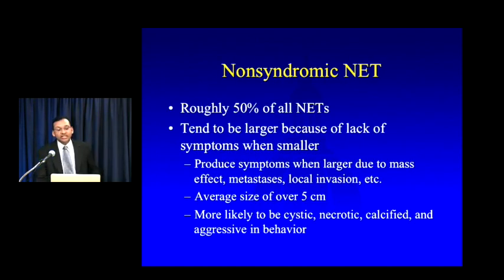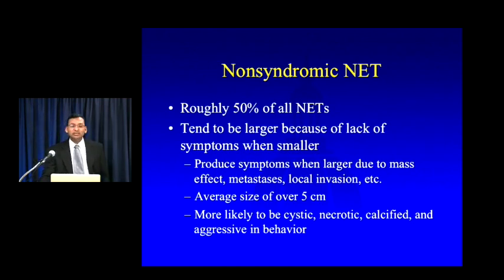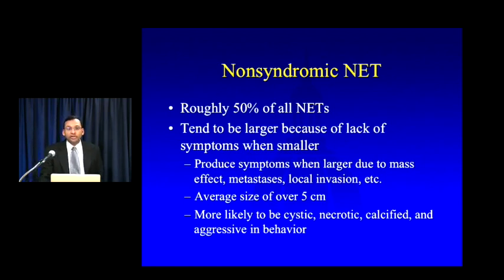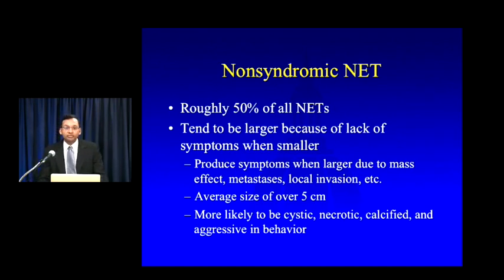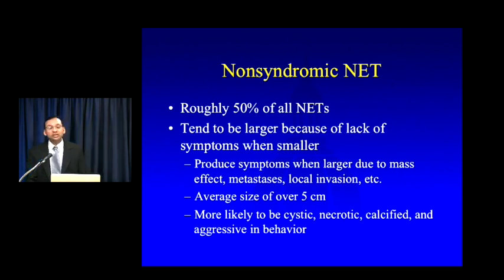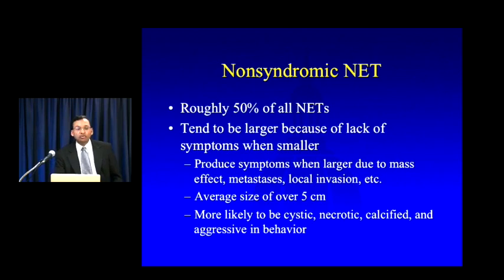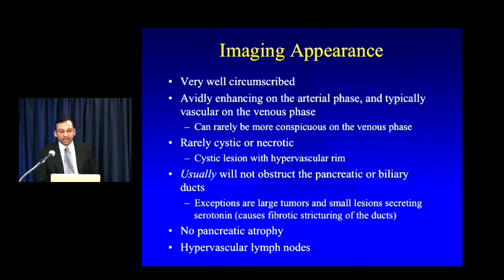Non-syndromic NETs account for about 50% of all neuroendocrine tumors. Because they're not producing symptoms when smaller, they tend to be quite large at presentation — average size about 5 centimeters. Symptoms occur when the lesion gets large enough to cause mass effect, metastatic disease, and local invasion. These tumors tend to look ugly and aggressive — much more likely to be cystic, necrotic, and calcified — and can generally look aggressive with distant metastatic disease.